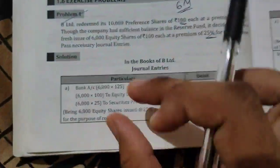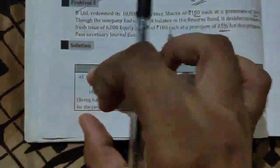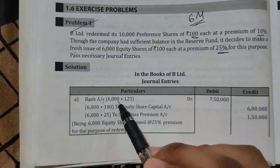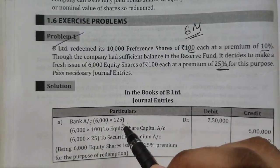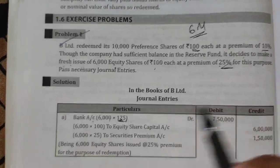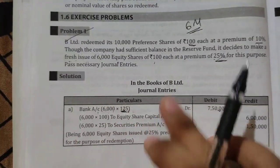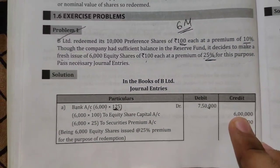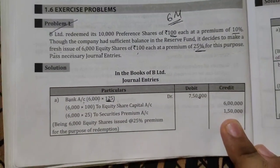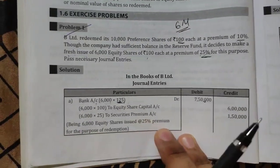The first entry is the fresh issue of equity shares. Bank account is debited with 6,000 into 125 — because 100 plus 25 is 125. The credit side: equity share capital 100 into 6,000 equals 6 lakh, and 6,000 into 25% gives 1 lakh 50 thousand for securities premium. Total comes to 7 lakh 50 thousand — being 6,000 equity shares issued at 25% premium for the purpose of redemption.